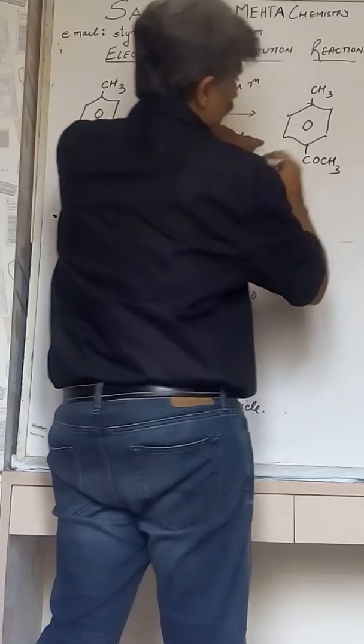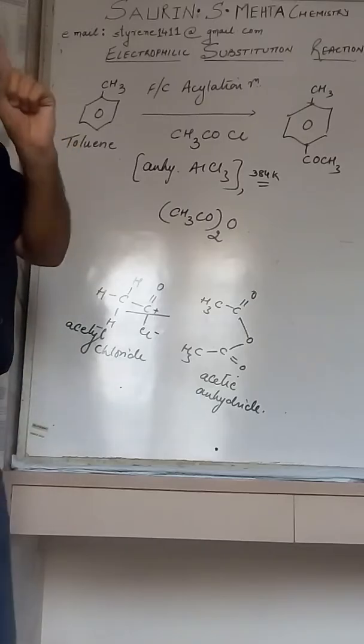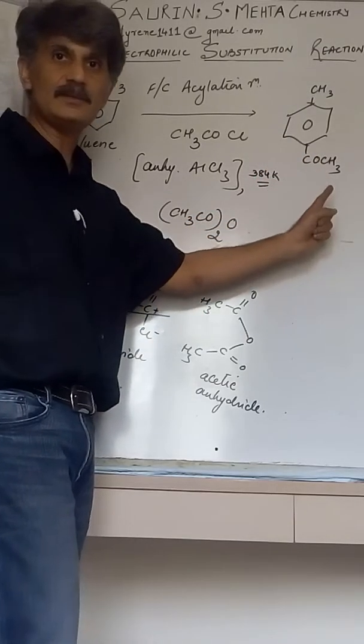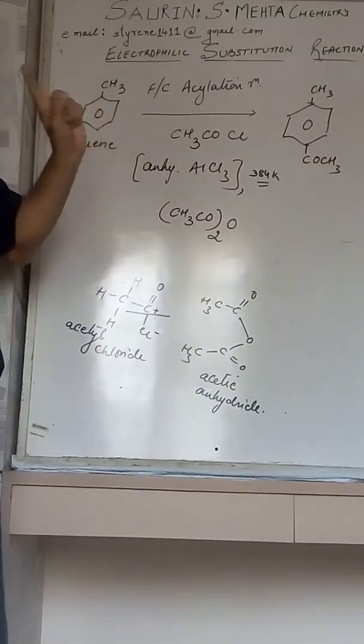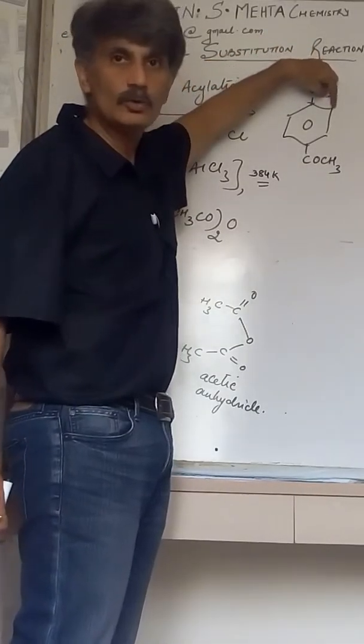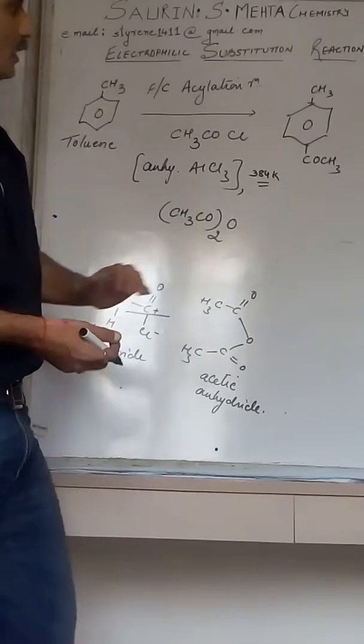But what happens in this case? You will have the product where the COCH3 group will get onto only and only the para position, not on ortho. Mind you, just keep in mind, COCH3 gets only and only on the para position, not on ortho, even though methyl can direct on ortho as well as para.